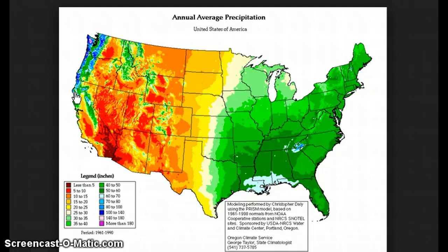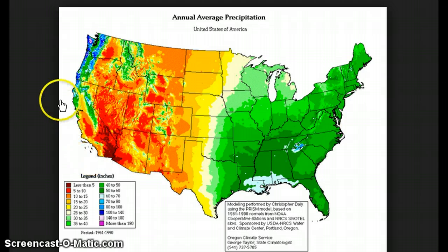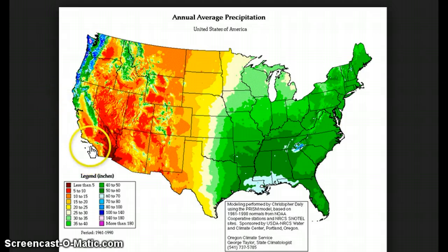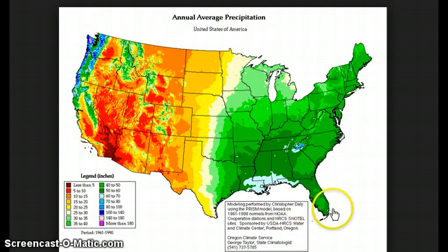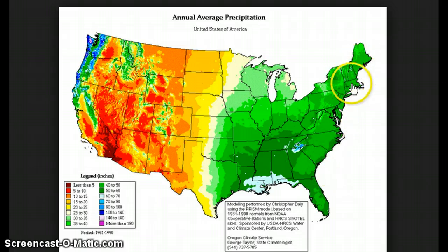But as far as the cold ocean current goes, once we get down here where those mountains aren't located anymore, we can see it starts to dry out because of the temperature of the ocean current. Whereas the east coast has more precipitation because of the warm current that it sits on.